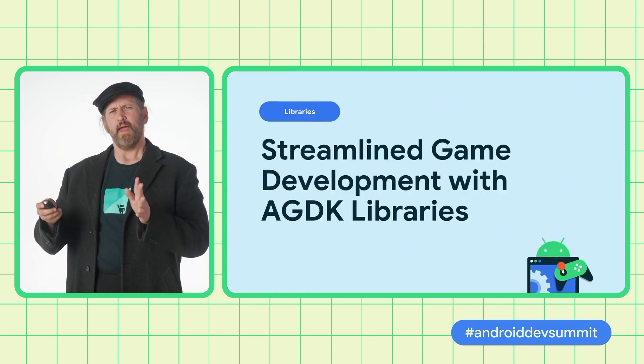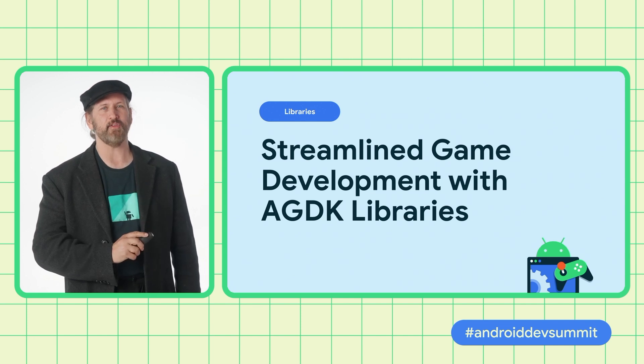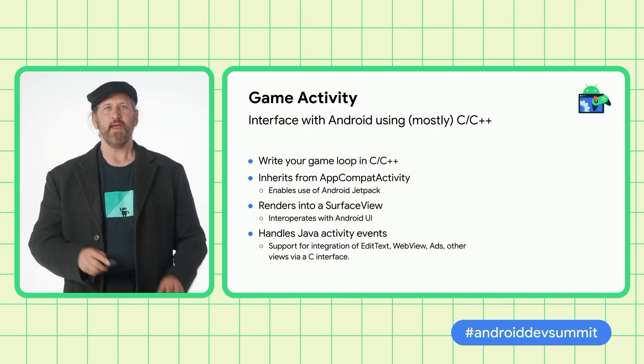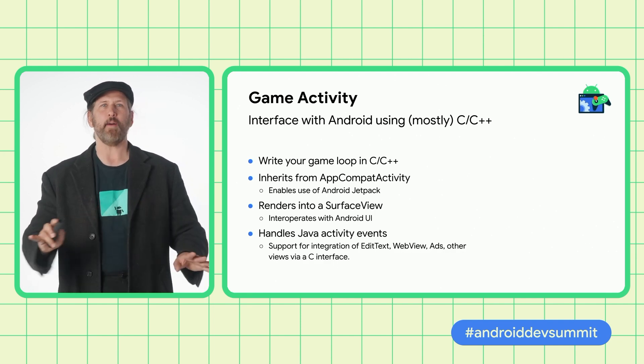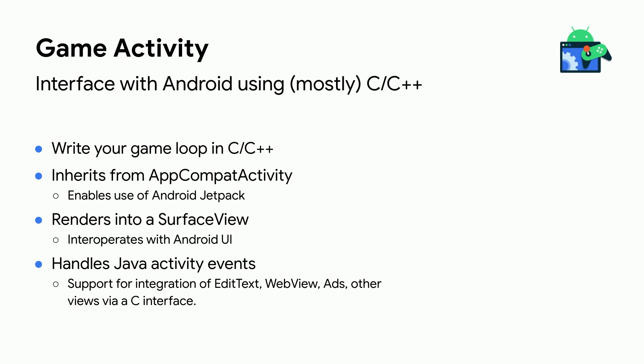Having tooling is a great start, but it still takes work to integrate with Android's managed code APIs. So to help out, we launched new C and C++ libraries as part of AGDK, the Android Game Development Kit. Game Activity is almost a drop-in replacement for the Android platform native activity. It integrates smoothly with our Android Jetpack libraries and the broader Android UI toolkit, allowing you to write your game loop completely in C or C++, while easing the integration of libraries built on Android Jetpack.